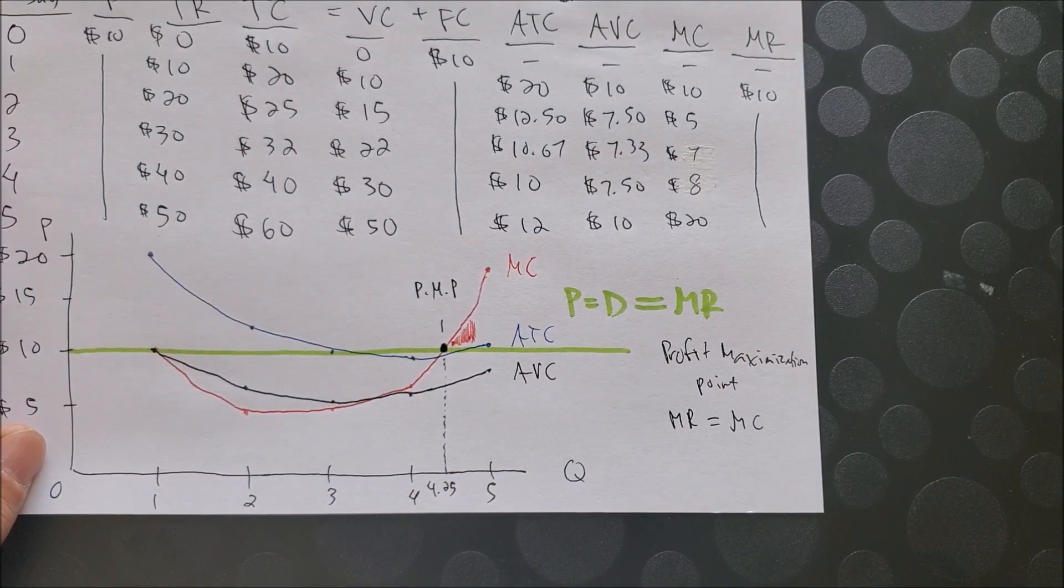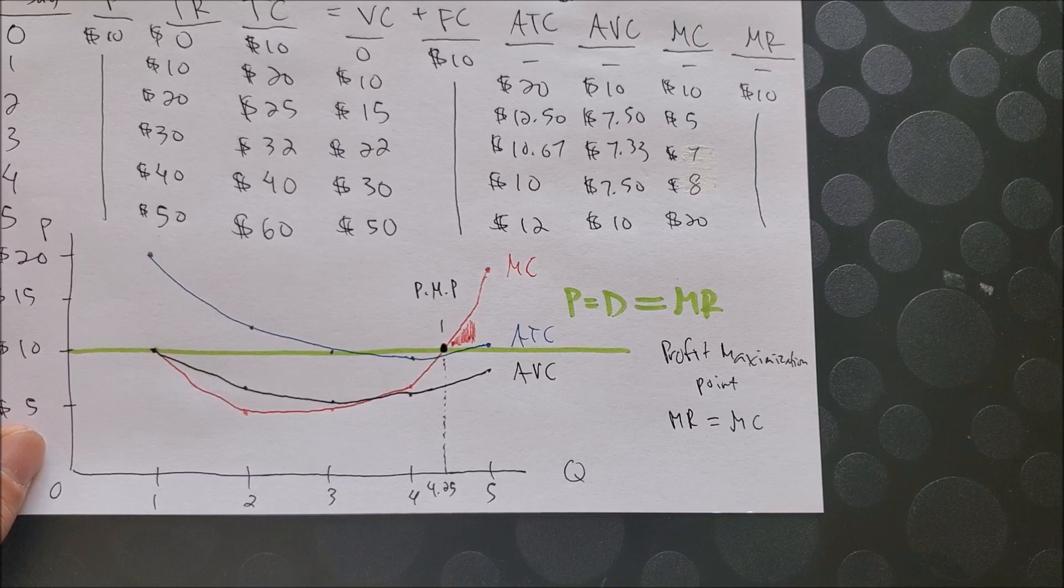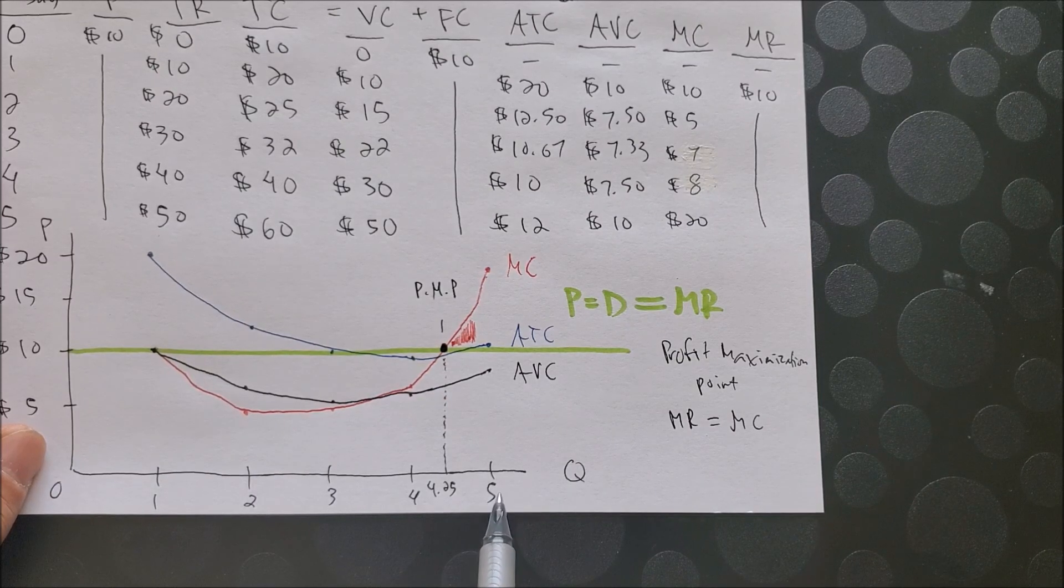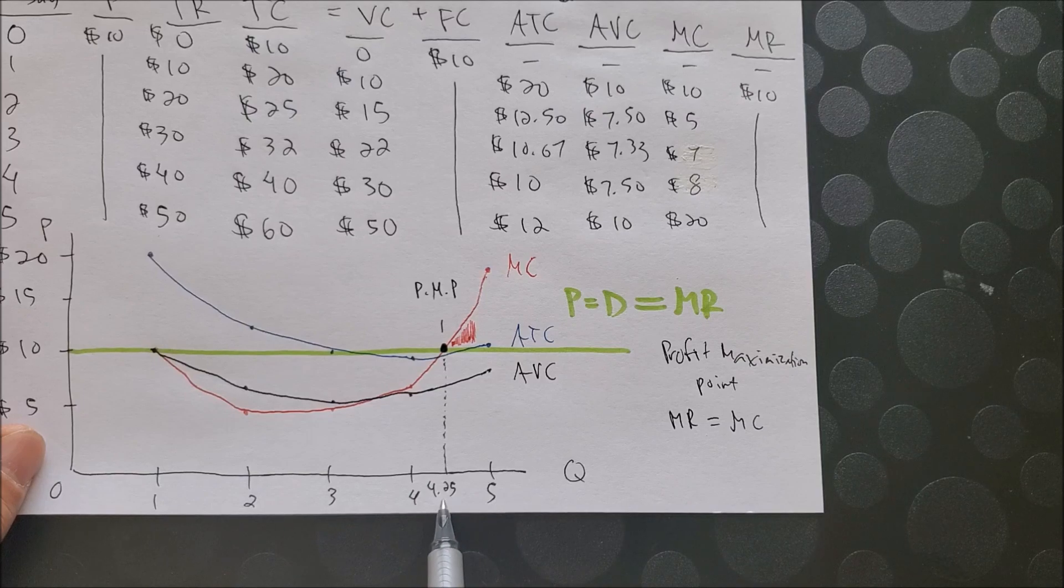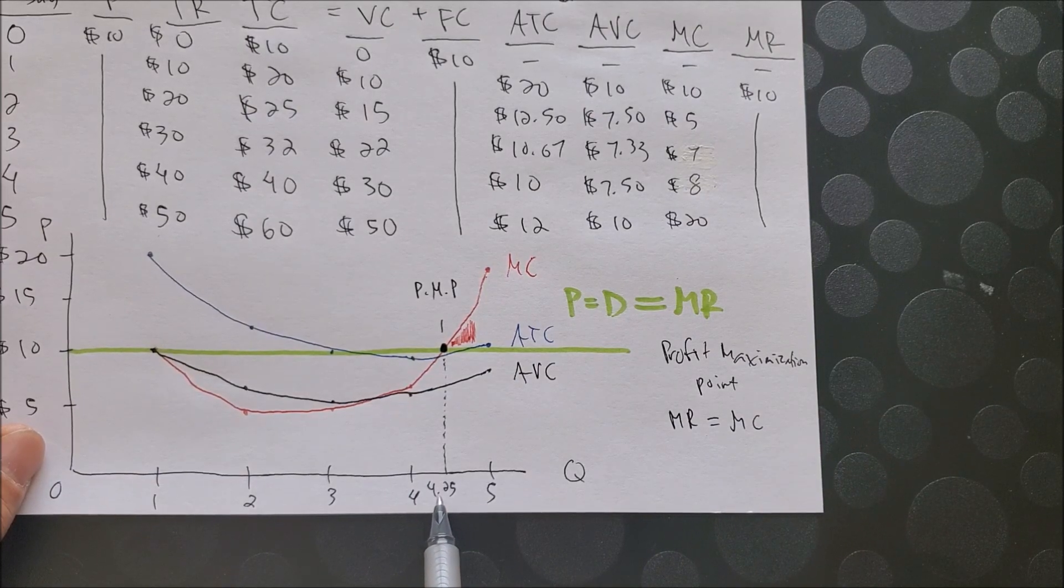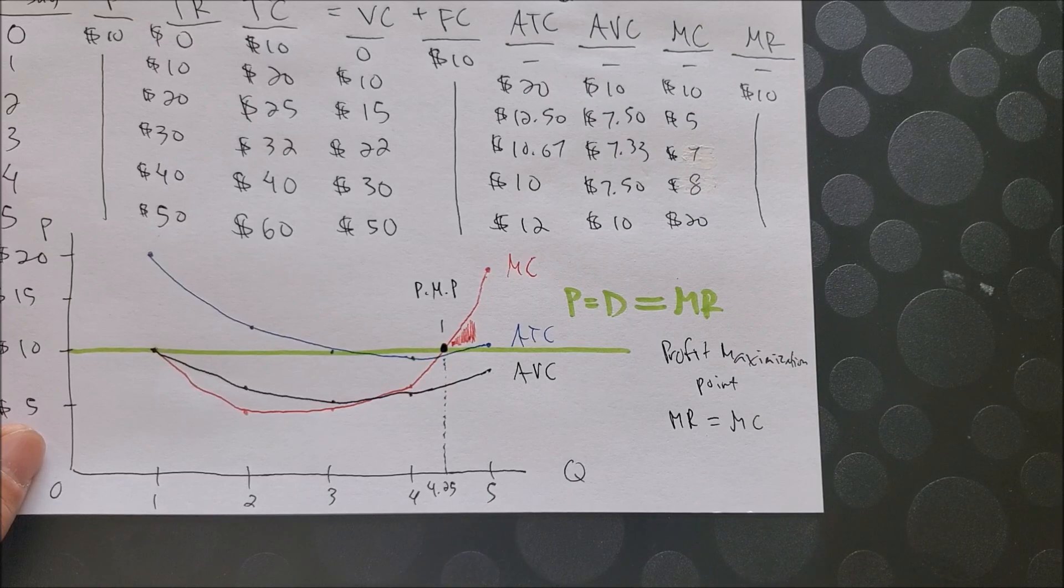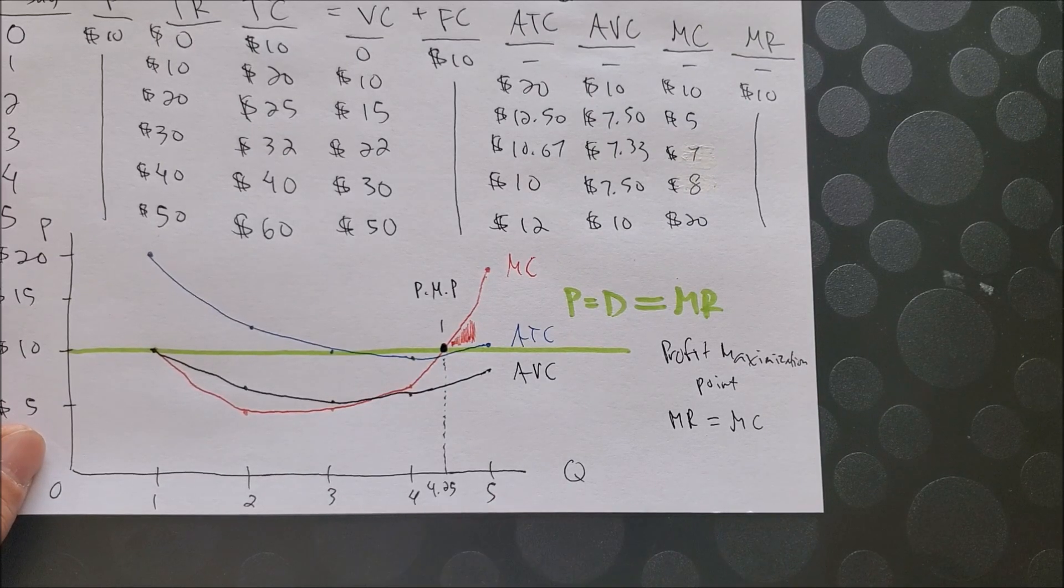We can't really wash 4.25 of a car. But if you made this in hundreds or thousands, you could see that you could wash 425 vehicles, 4,250 vehicles, if we look at 4.25.